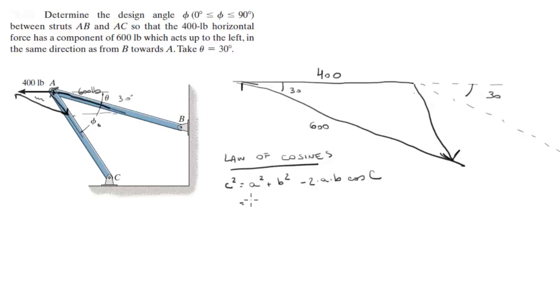When you plug the numbers in you get 400 squared plus 600 squared minus 2 times 400 times 600 cosine of 30 is equal to c squared, which is this member component AC. AC squared is equal to all of this. When you solve this you're going to get that AC is equal to 323 pounds.